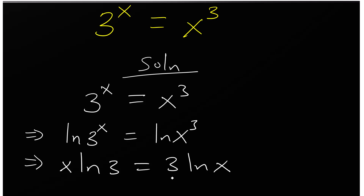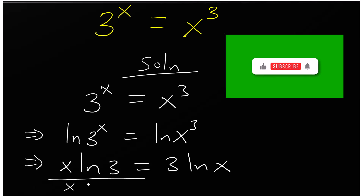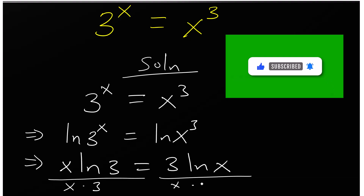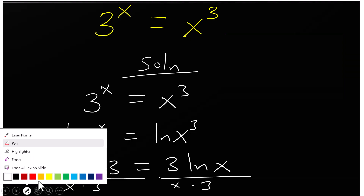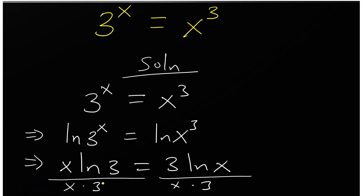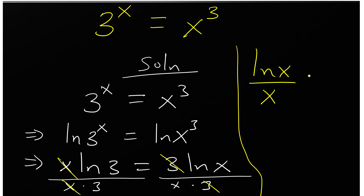Now we divide both sides — divide by x times 3 — so this side cancels and that side cancels. We end up with ln(x) over x equals ln(3) over 3.